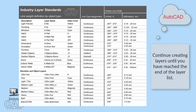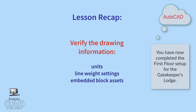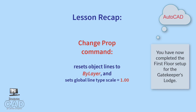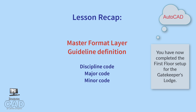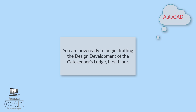Continue creating layers until you have reached the end of the list. Once all layers have been created, place all object lines on the correct layers. The final base plan drawing will now appear similar to the example. You have now met the objectives for this assignment: always verify file information including units, line weight settings, and embedded block assets; use the change property command to reset all object lines to a by-layer definition; and create layers following the master layer format guidelines utilizing discipline, major, and minor codes. You are now ready to begin the drafting process for the design development of the Gatekeeper's Lodge first floor level.